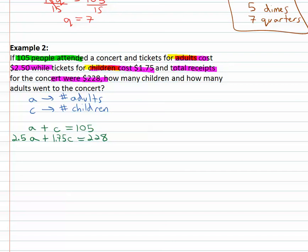Again, we are all set up to use elimination or addition because everything is lined up, ready to go. Let's multiply the first equation by negative 1.75, that way the c's will eliminate. We could have multiplied by negative 2.5, there's no reason we had to pick on the children, but that's what we'll do. We'll pick on the children. So the first equation becomes negative 1.75a, negative 1.75c equals 105 times 1.75 is negative 183.75.